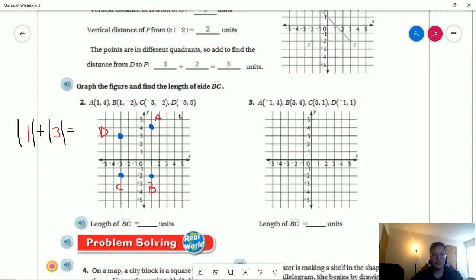So number two, what they wanted us to start with was to go ahead and put the points on the coordinate plane. And then we are trying to figure out what the length of this particular section of the figure would be. So there are two different ways that we can do that. We can count using the grid as kind of a number line or we can take the absolute value of the points that are different. So B is going to have a negative 2 that C also has. So we can take the absolute value of 3 and the absolute value of 1 and add them together to find out the distance they are apart.